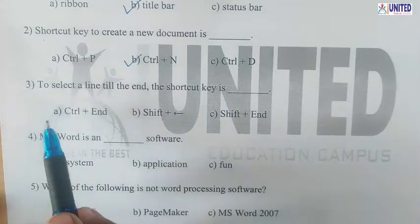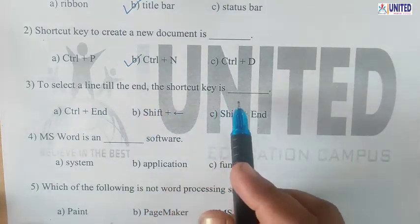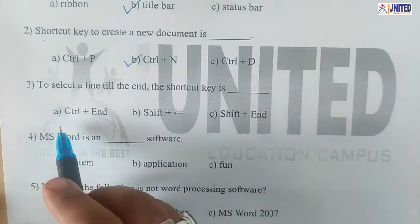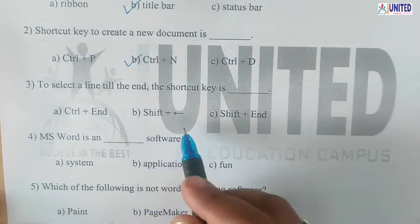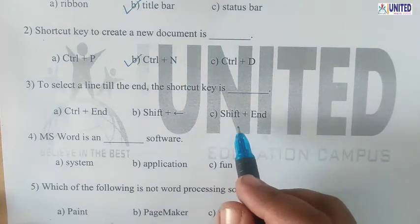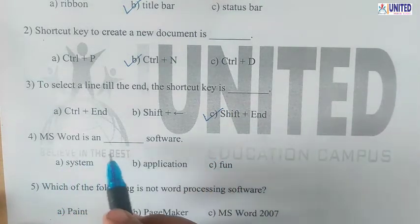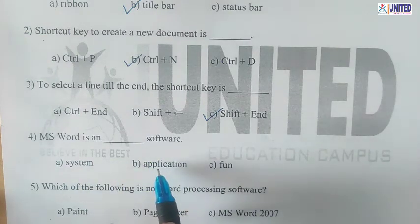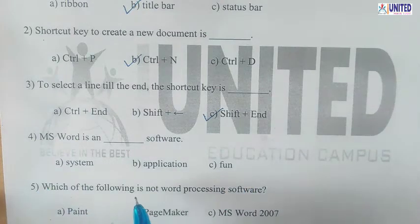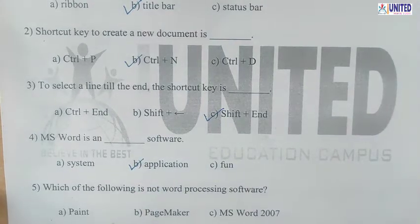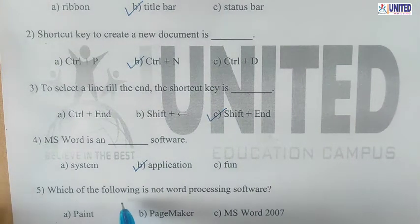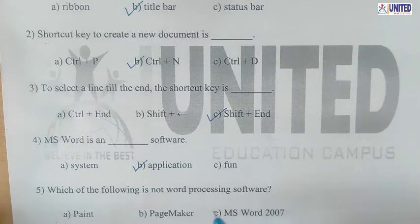Number 3: To select a line till the end, the shortcut key is — options are A. Ctrl+N, B. Shift+Left Arrow key, C. Shift+N. The answer is C option, Shift+N. Number 4: MS Word is a — software. Options: A. System Software, B. Application Software, C. Fun Software. MS Word is an Application Software, so tick option B. Number 5: Which of the following is not a Word Processing Software? The answer is A. Paint — tick the A option.